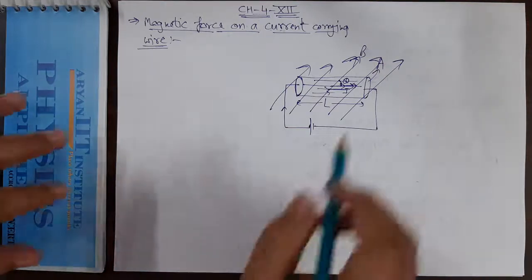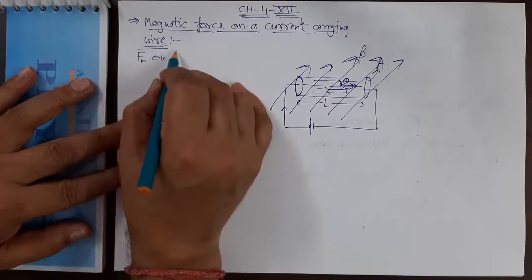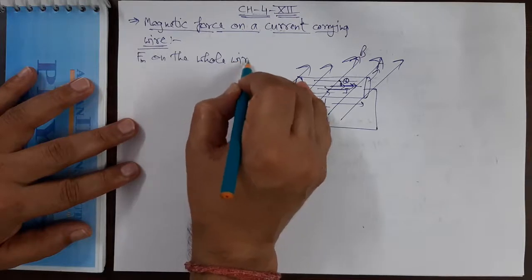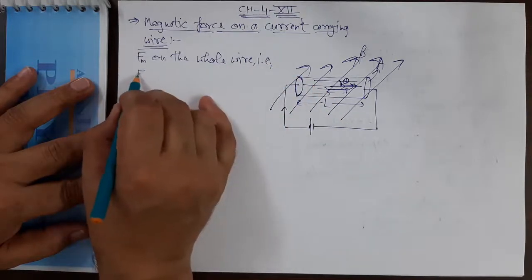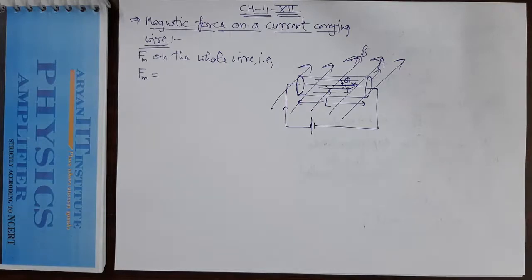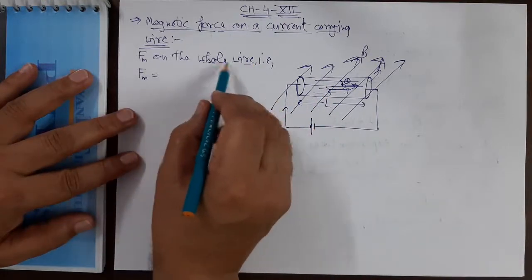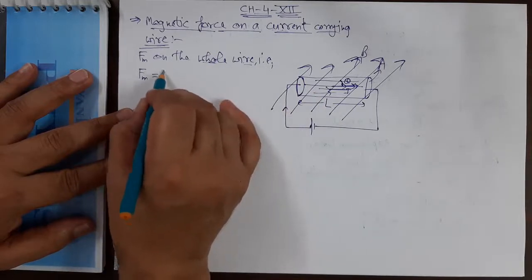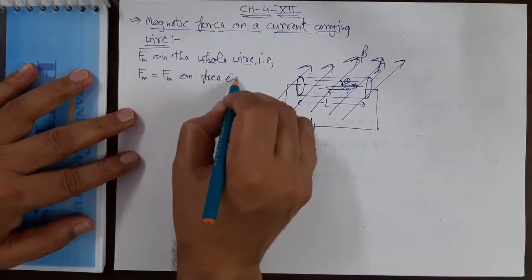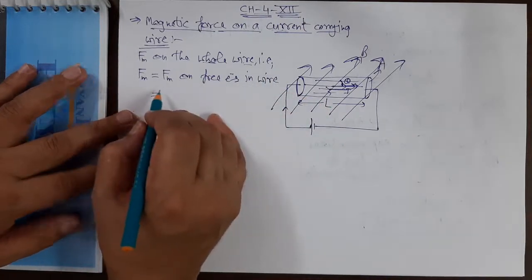We have to calculate the magnetic force on the whole wire. The magnetic force on the whole wire is due to the current, which is set up by the free electrons. So the force on the entire wire equals the magnetic force on all the free electrons in the wire.